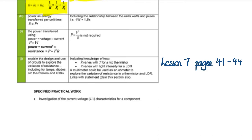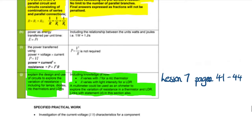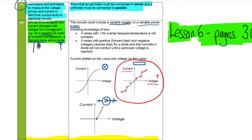The part we're learning today includes knowledge of how resistance varies with temperature for a thermistor, and how resistance varies with light intensity for an LDR. A multimeter could be used as an ohmmeter to explore the variation of resistance in the thermistor and LDR. This links with statement D in the section, where we learned about IV graphs for the bulb, fixed resistor, and diode.